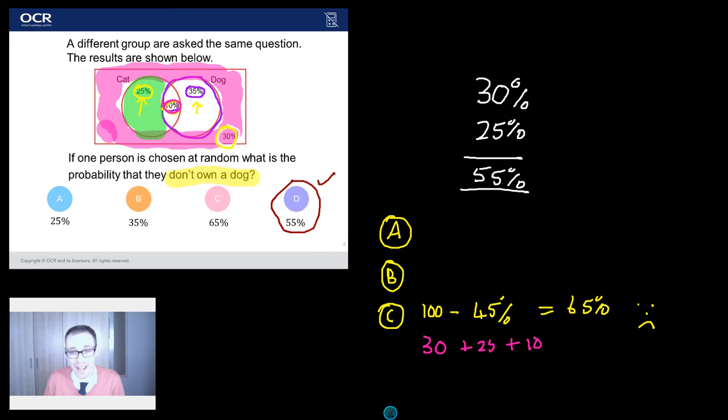Any other answers that people might go for for this? I was thinking maybe 45%. That could be a possibility. Why would somebody say 45%? Well, I think they'll say 45% because they're 45% who just own a dog. It's the 35% who own a dog and the 10% who own a dog and a cat. So simply misreading the question could be a way of going for that one.